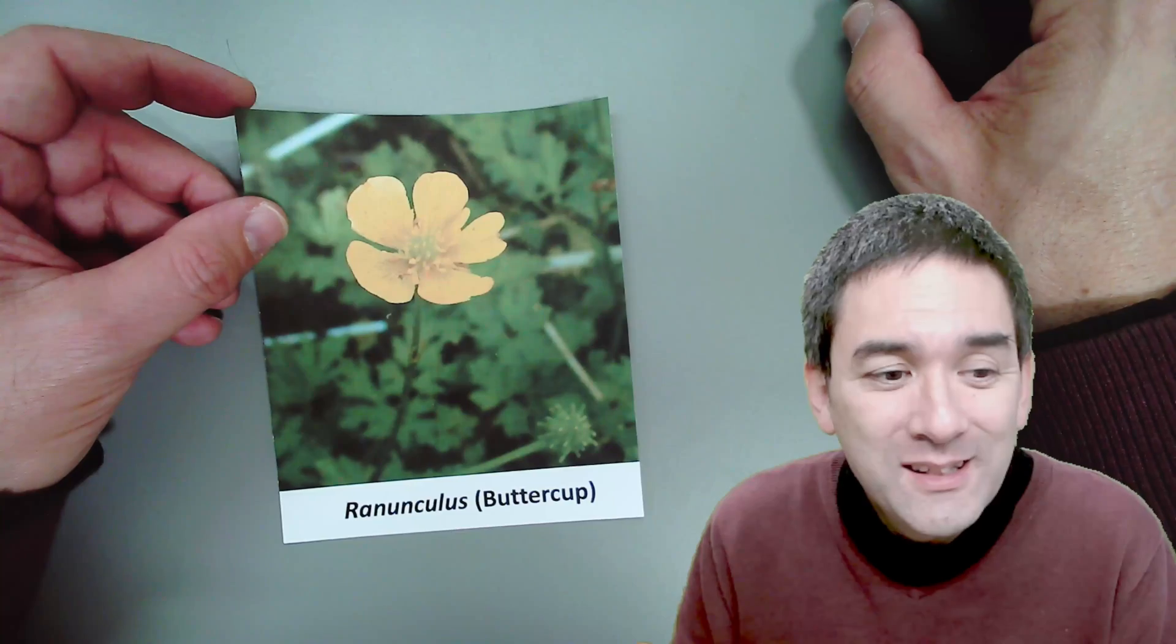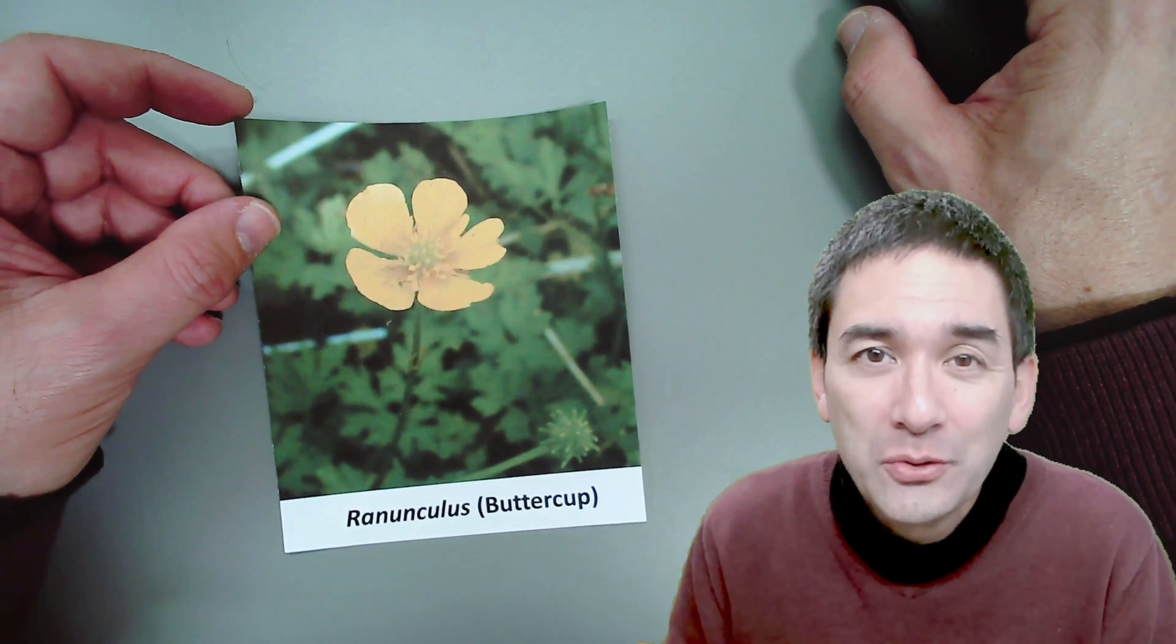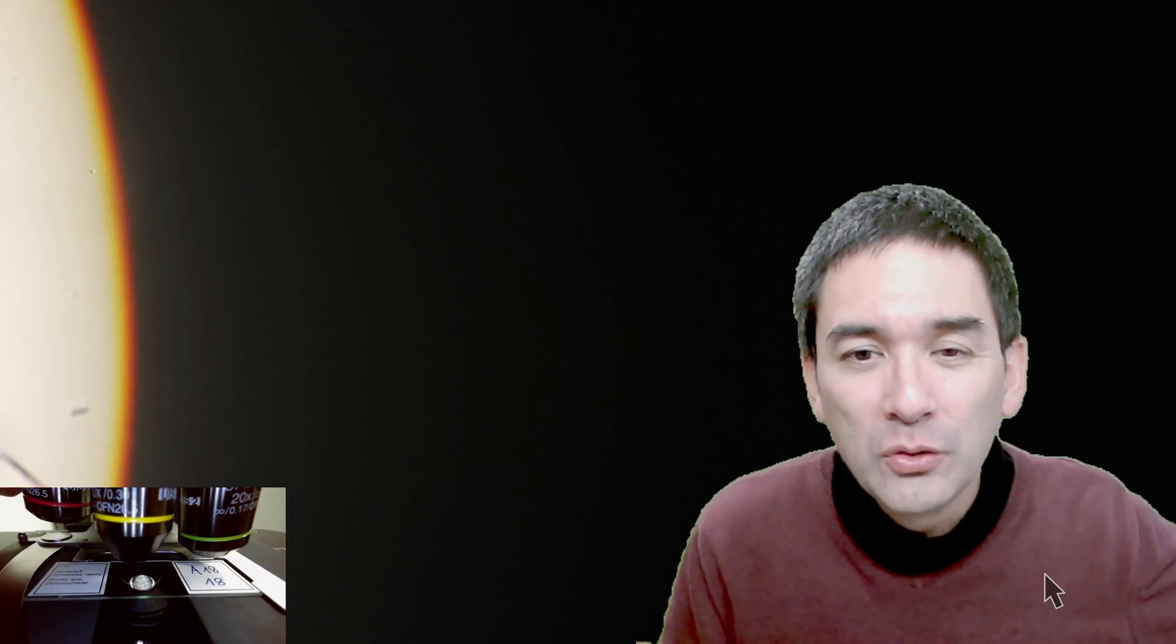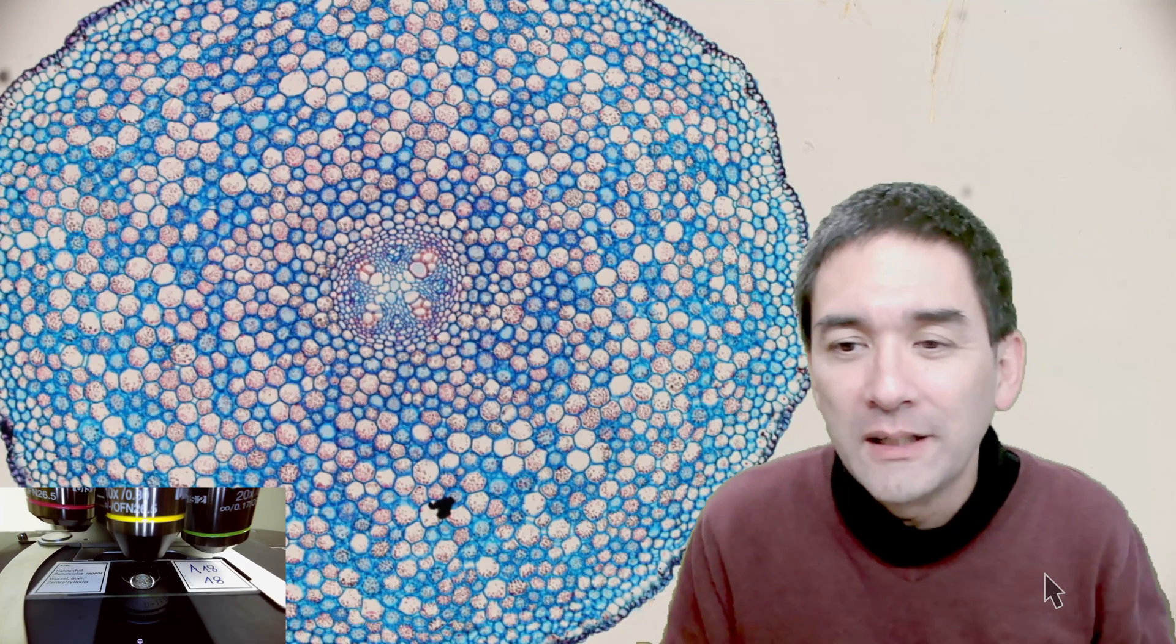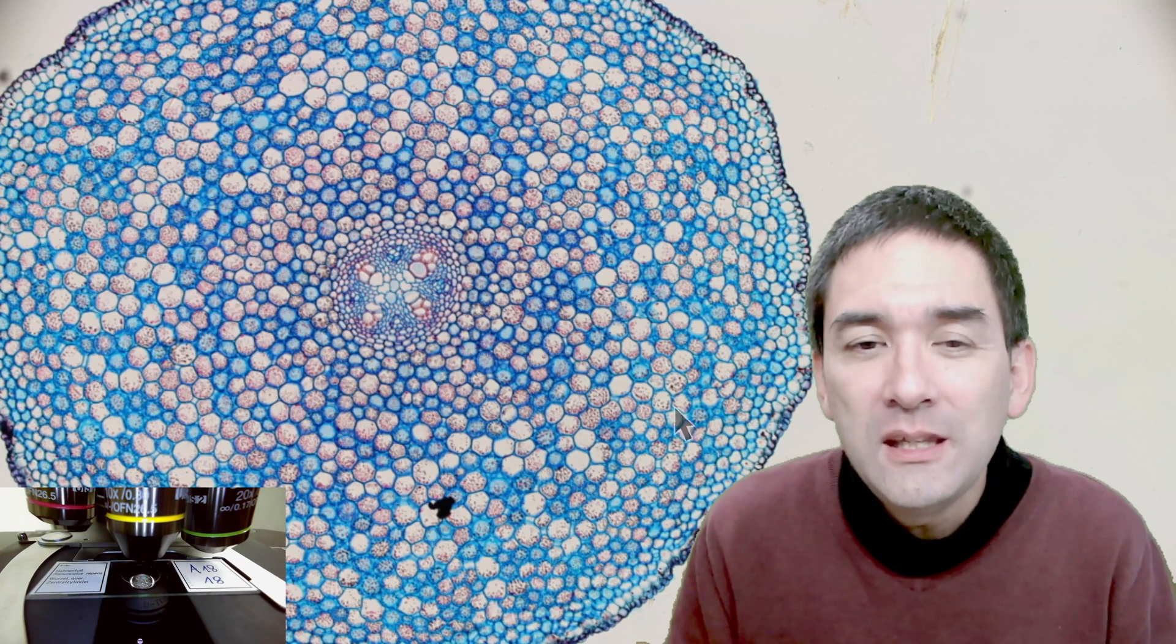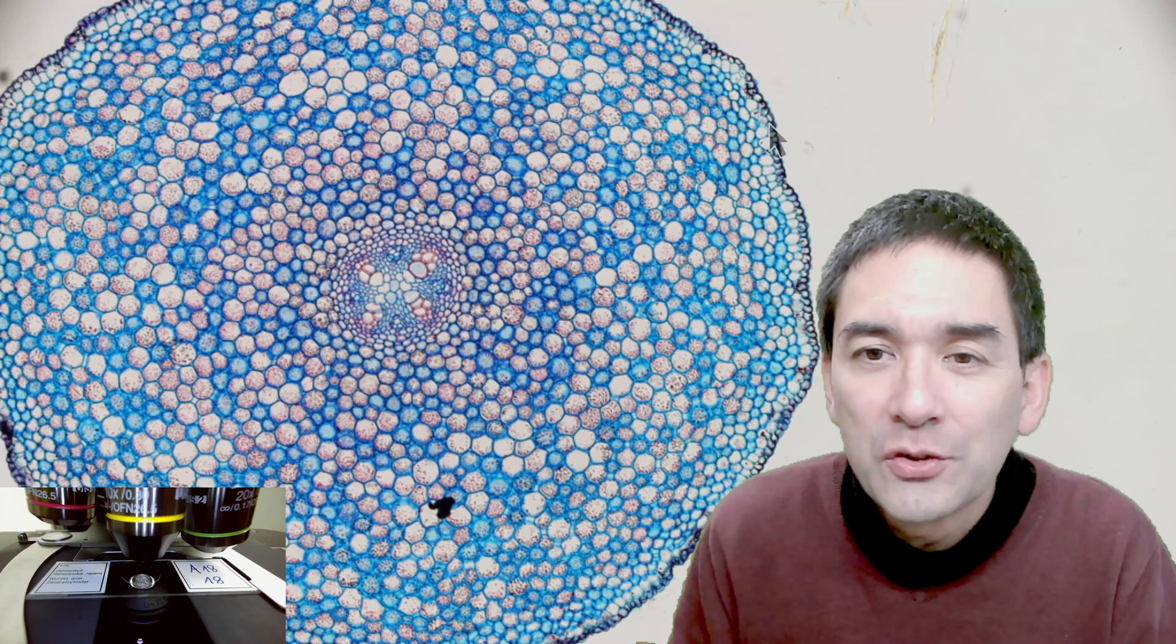It's exactly this cross section that I would like to look at today with you and I would also like to explain a little bit the different parts of the root here. I'm going to go down a little bit with the magnification right now and what we see here is of course the cross section. We see different cell layers.